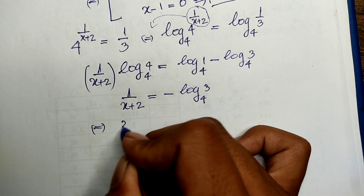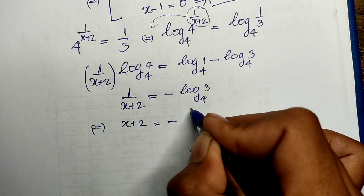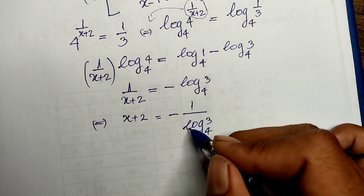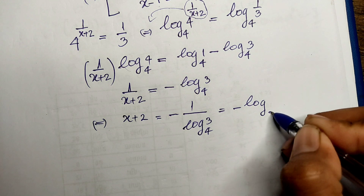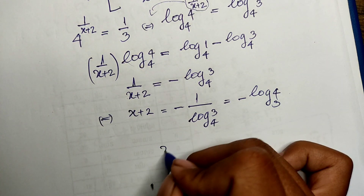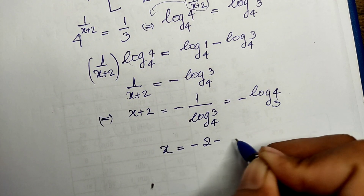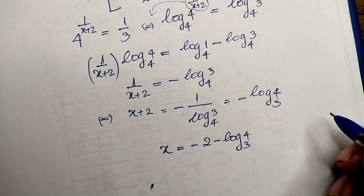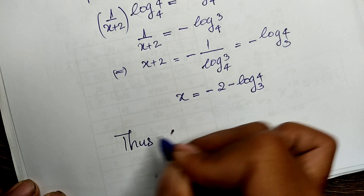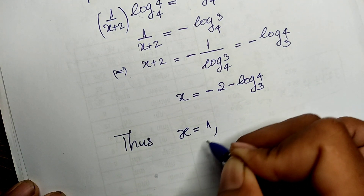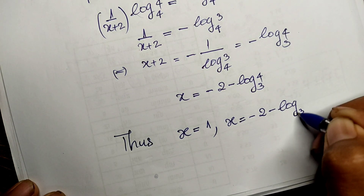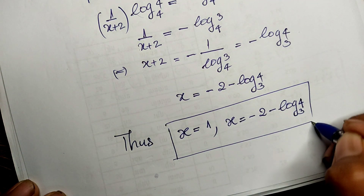We change the subject: h plus 2 equals negative 1 divided by log base 4 of 3, which we can rewrite as negative log base 3 of 4. So h equals minus 2 minus log base 3 of 4. Our two solutions are: x equals 1 and x equals minus 2 minus log base 3 of 4.